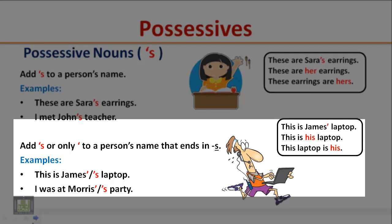Examples: This is James' laptop. I was at Morris' party. Notice here that the word James ends with S, so we add either apostrophe or apostrophe S.